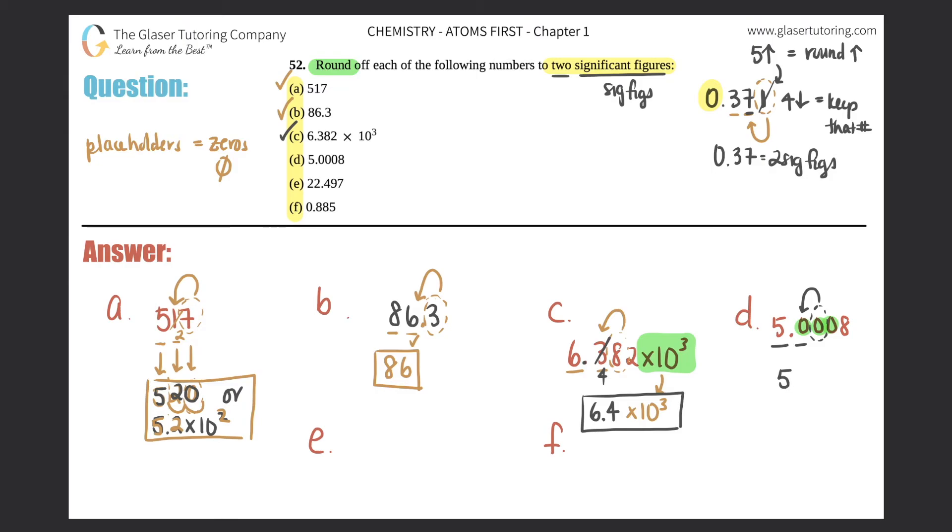E, 22.497. So let's get our two sig figs, the two and the two. The next number will tell you if you can round, but it's a four, so it's not five or above, so the two will stay. So this would just be 22, and you forget all the other ones because they are more than two sig figs. So that would be two sig figs for e.